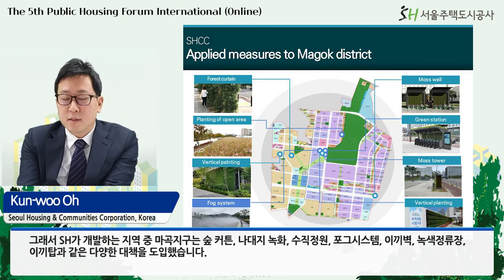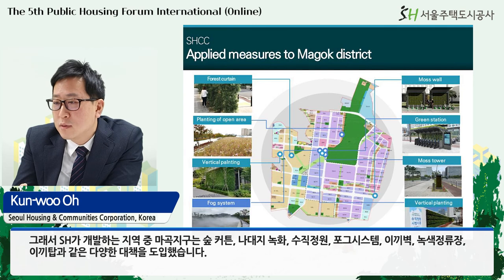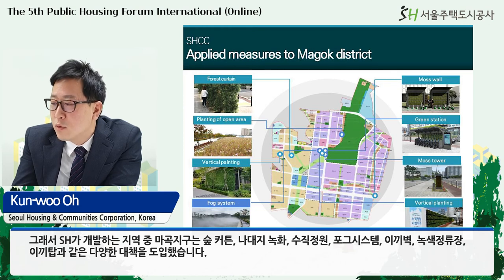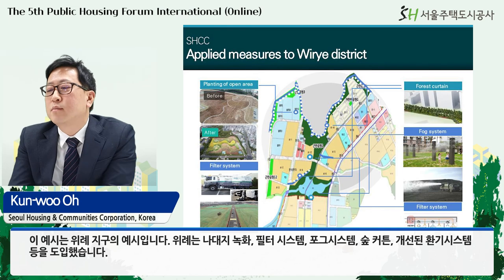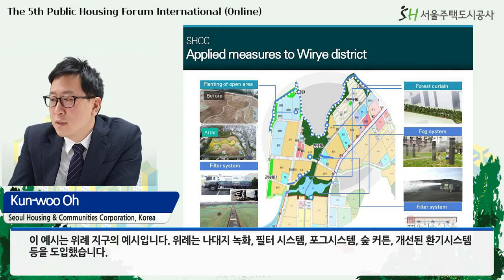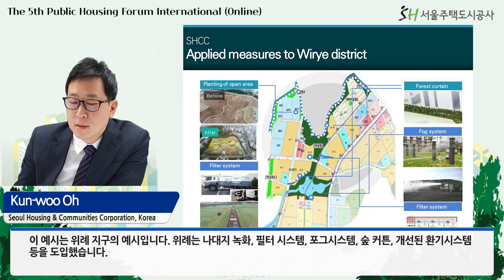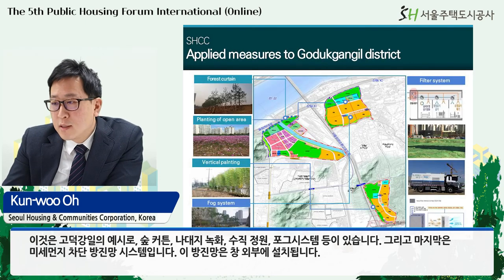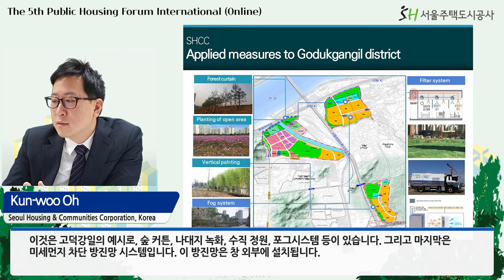Among SHCC's developing districts, the Maguk district introduced various measures including forest curtains, planting of open areas, vertical planting, fog systems, moss walls, green stations, and moss towers. Another case includes planting of open areas, a filter system, fog system, forest curtains, and upgraded ventilation system. For the Godeok-Gangil district, there are forest curtains, planting of open areas, vertical planting, and fog systems. Additionally, a fine dust net system was introduced, which is inserted outside of windows.